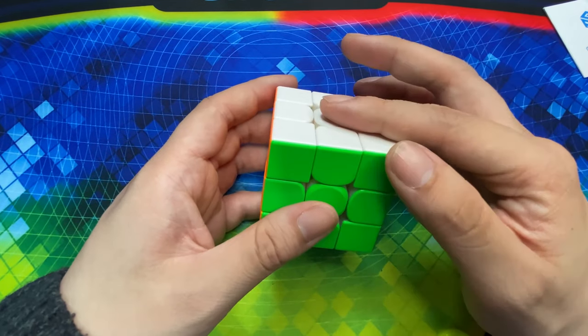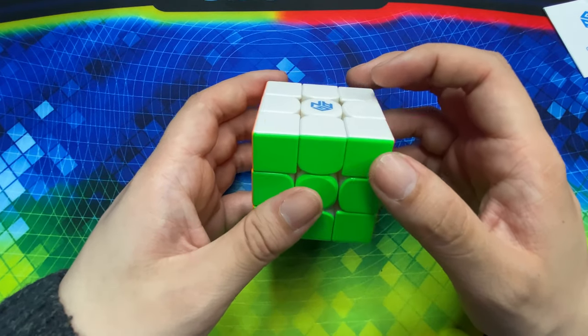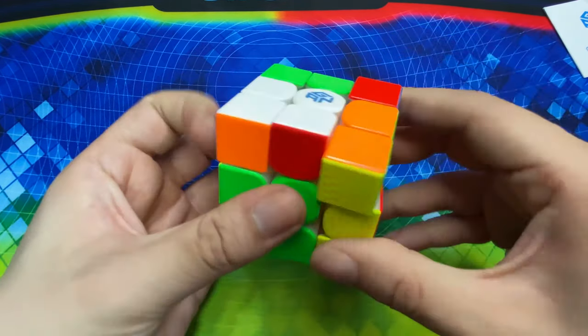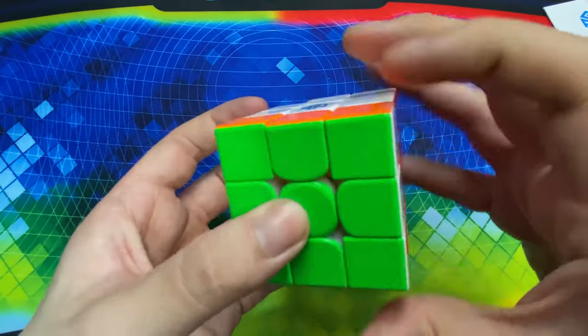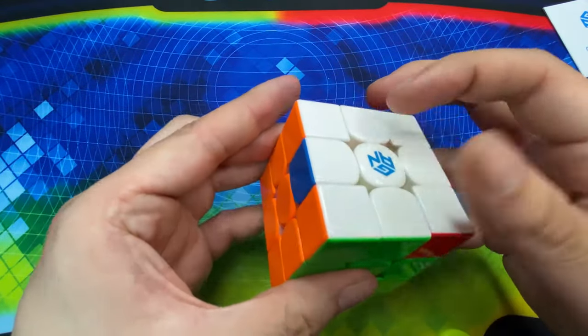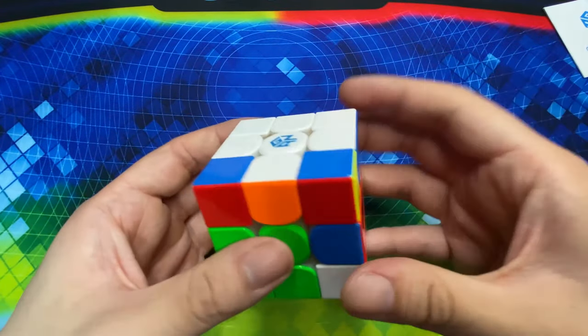En segundo lugar en cuanto al giro este cubo es mucho mucho mucho más controlable que sus versiones anteriores. No veía un cubo así que podía girar con tal comodidad desde el GAN 12 de fábrica así como viene, no tiene nada, no tiene lubricante. Bueno viene con lubricante de GAN supongo.